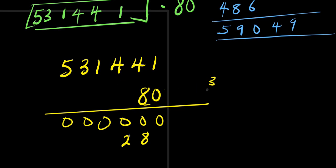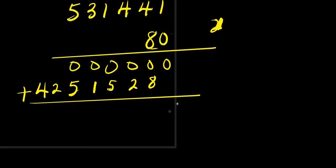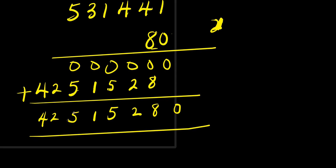Eight times four is thirty-two, plus three is thirty-five — write five, carry three. Eight times one is eight, plus three is eleven — write one, carry one. Eight times three is twenty-four, plus one is twenty-five — write five, carry two. Eight times five is forty, plus two is forty-two. Adding everything up: zero, two, five, one, five.